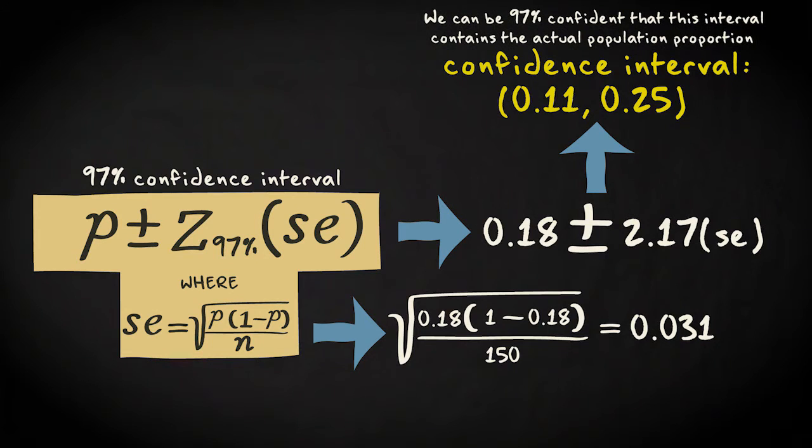We can be 97% confident that this interval contains the actual population proportion of babies that can spurt further than 50 centimeters. So my advice to new parents: never paint the walls of your baby's room before your son or daughter is toilet trained.